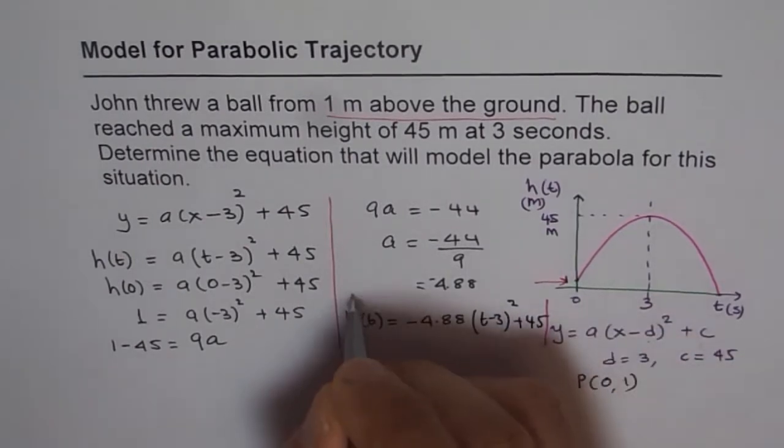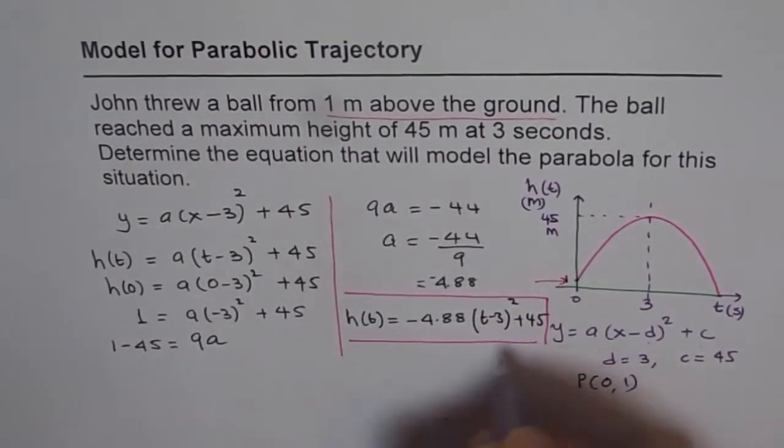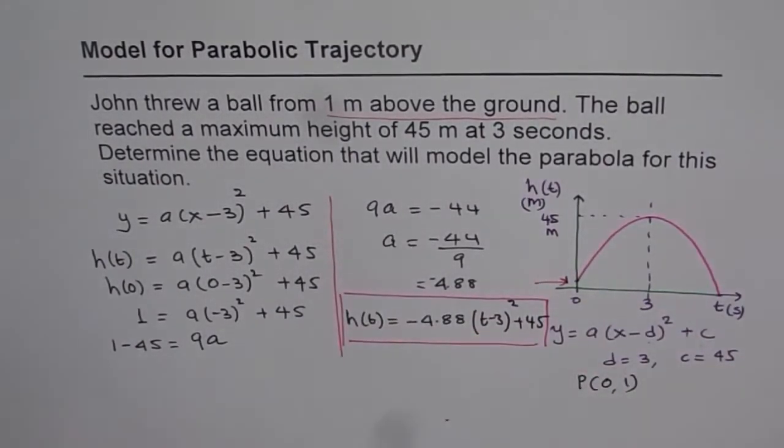So this equation here represents the parabolic path of the curved surface. Right? So that is how we get the equation which represents a parabola from the given conditions. Thank you and all the best.